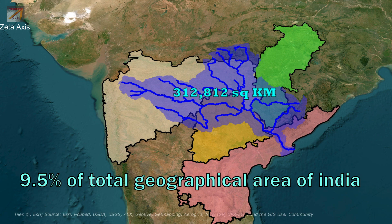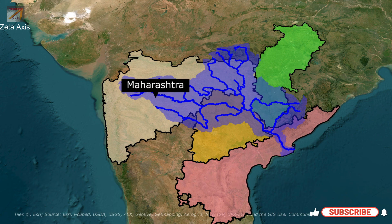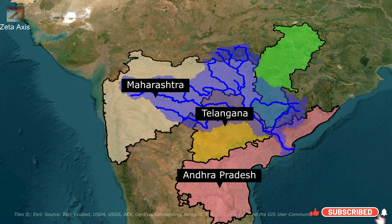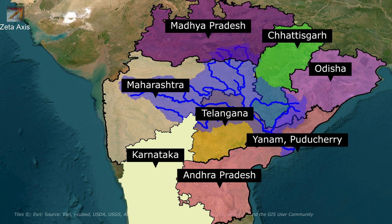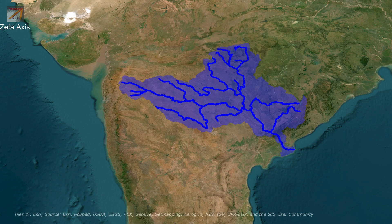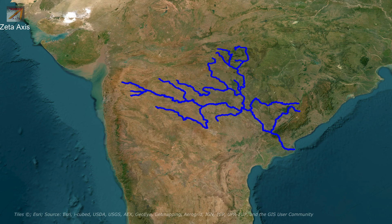The Godavari River Basin includes Maharashtra, Telangana, Andhra Pradesh, Chhattisgarh, Odisha, Madhya Pradesh, Karnataka and the Union Territory of Pondicherry. In terms of length, catchment area and discharge, Godavari is the largest river in Peninsular India and therefore it is called Dakshina Ganga, i.e., the Ganga of the South.